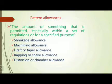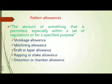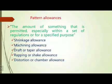The total pattern allowances — we have five different allowances: one is shrinkage, machining, draft or taper, wrapping or shake, and distortion or camber allowance. These are all five different allowances, and we are providing each for a specified purpose with a set of regulations.